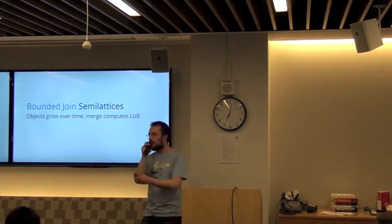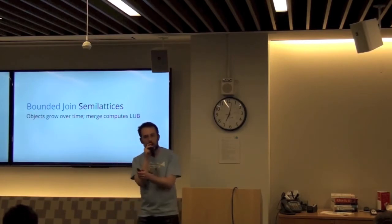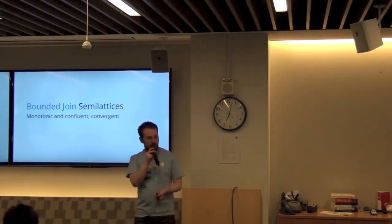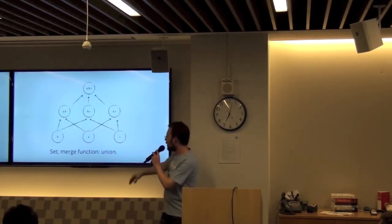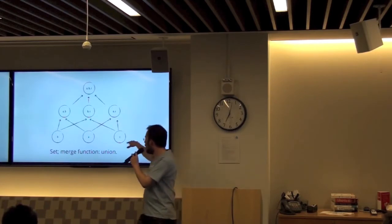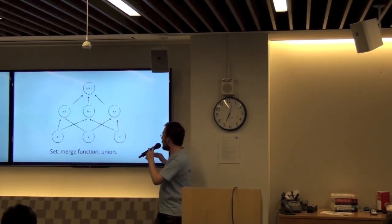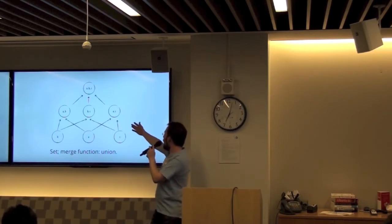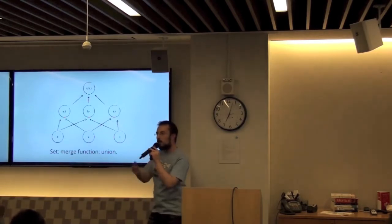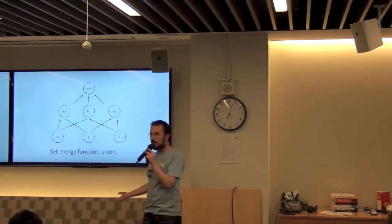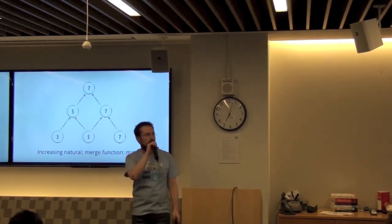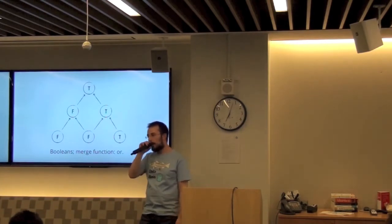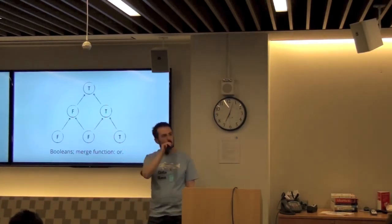Objects grow monotonically, and Riak's merge function for CRDTs computes the least upper bound. Example: three concurrent writers write B, A, and C to the same key on different replicas. B and A converge to {A,B}, A and C converge to {A,C}, B and C converge to {B,C}, and eventually all converge to {A,B,C}. No data was lost and no application-layer reconciliation was needed. This works for naturals with the max function, and for booleans — if one true reaches the database amid many falses, the result will always reflect true going forward.